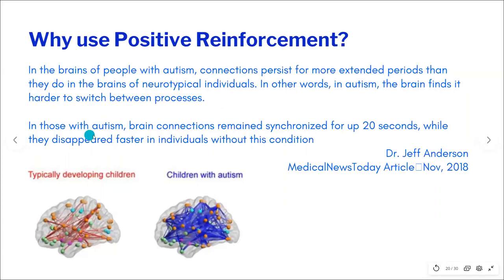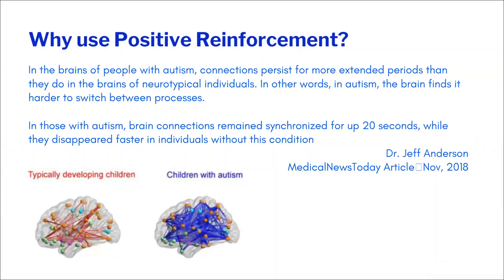In children or individuals with autism, these brain connections can remain synchronized for up to 20 seconds. So once you give an instruction, the processing time and speed is much slower than in typical children. If you give an instruction, expect an immediate response, and then bombard the child with another instruction, a kind of traffic jam happens in the brain of children with autism, and they cannot function that way.